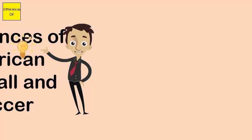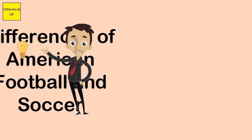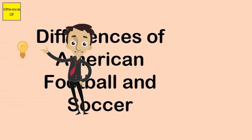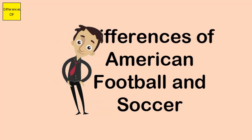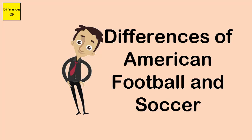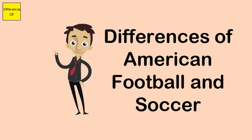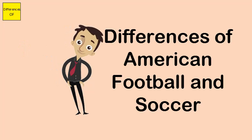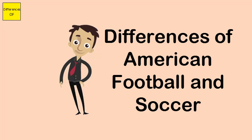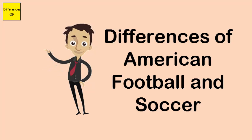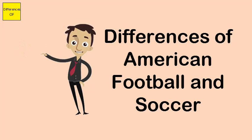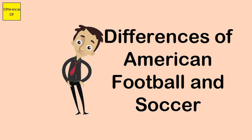Difference between American football and soccer. American football is a word that has more in common with rugby. Soccer is called association football. American football is a game with intense physical aggression and explosiveness that requires helmets and padding to be worn.